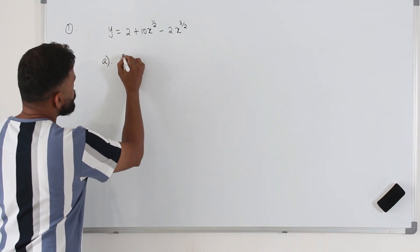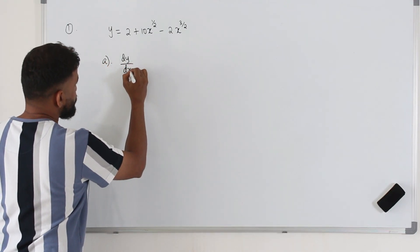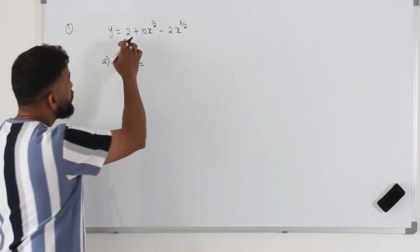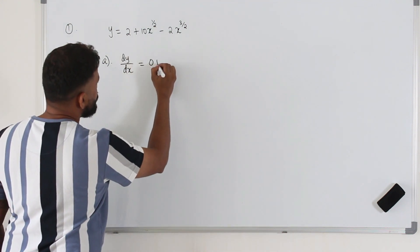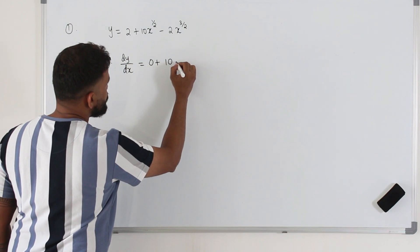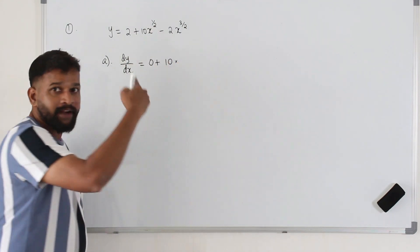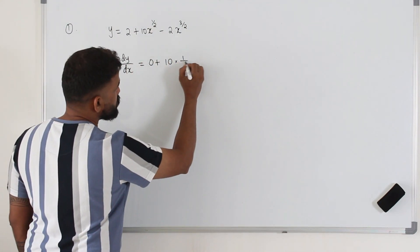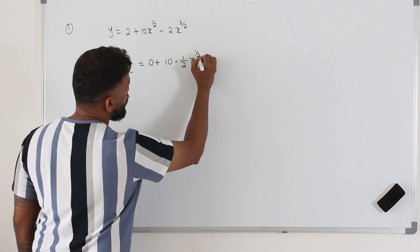So in part A, we need to find the first derivative of y with respect to x. So differentiate it. Derivative of a constant is 0, 10 keep it as it is. Derivative of x power n is nx power n minus 1. So half x power half minus 1.